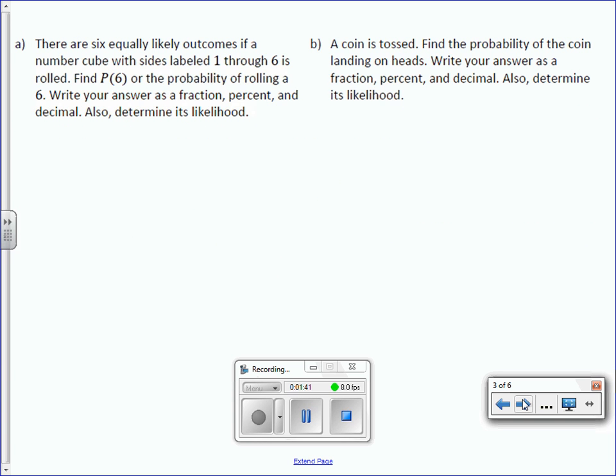There are six equally likely outcomes if a number cube with sides labeled 1 through 6 is rolled. Find P of 6, or the probability of 6, of rolling a 6. Write your answer as a fraction, percent, and decimal. Also determine its likelihood.